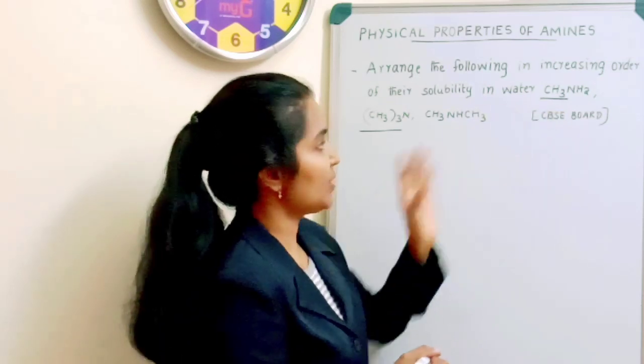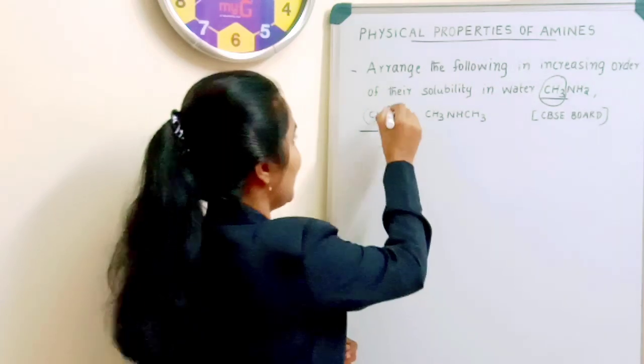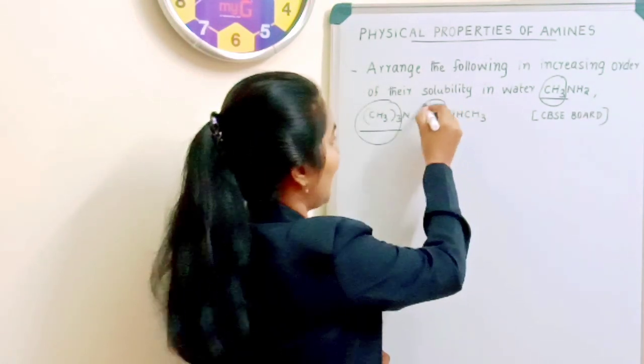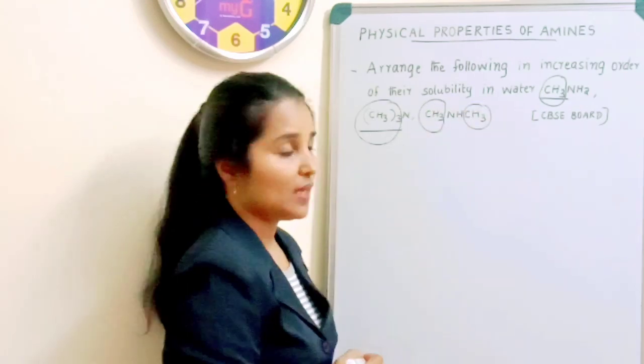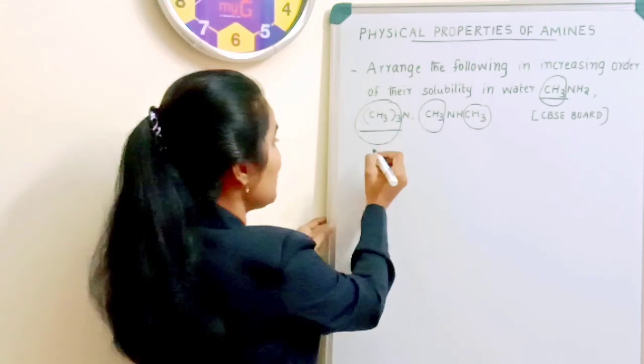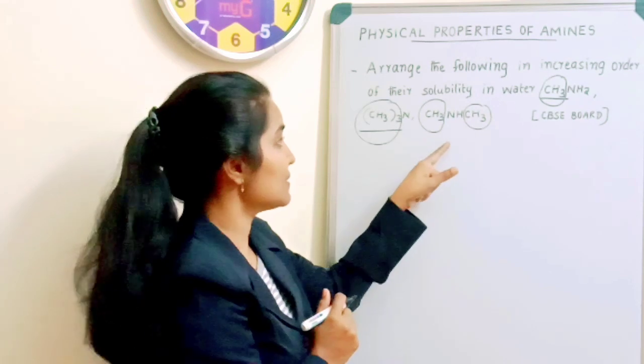Just look into that question. We have here CH3NH2 and this is a hydrocarbon part. And here we have CH3CH2NH2, the hydrocarbon part. And here we have one CH3 here and one CH3 here. So this is primary, this is secondary and this is tertiary. And this will have the longest hydrocarbon chain, right? And then this and then this.